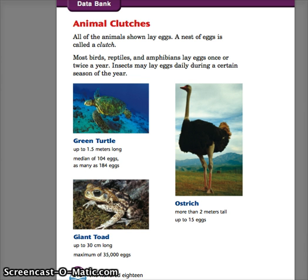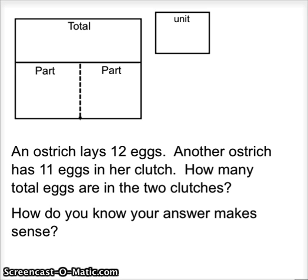For the first problem, we will be looking at the ostrich. Notice the ostrich is a large bird, more than two meters tall, and it can lay up to 15 eggs. An ostrich lays 12 eggs. Another ostrich has 11 eggs in her clutch.